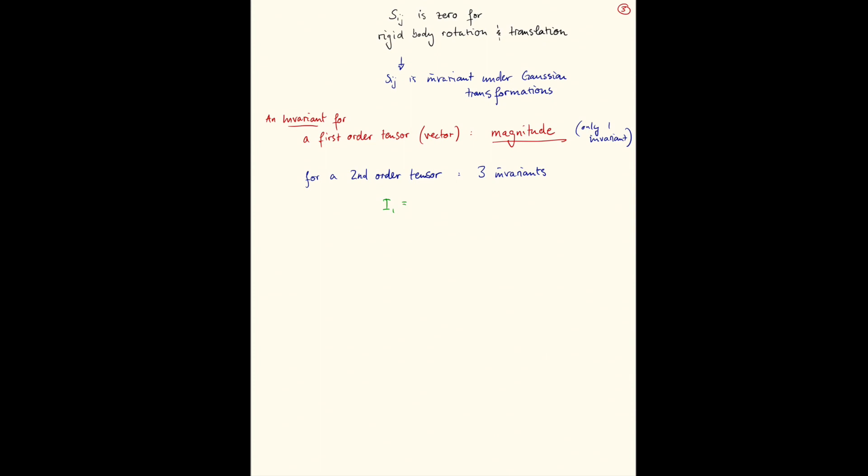And the first one, invariant 1, is the trace of our strain rate tensor, which is written as SII, which means it's just the sum of the diagonal elements. So that sum here never changes under rotation or translation.